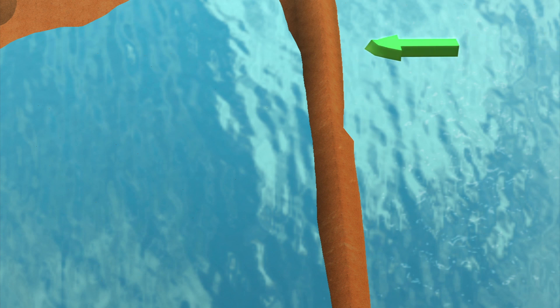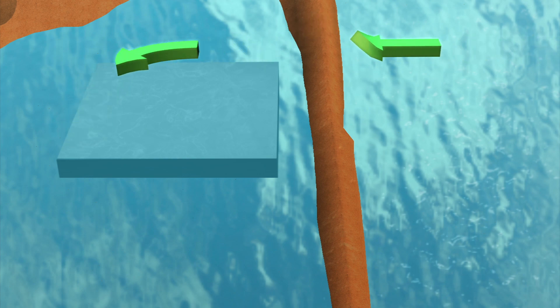As waves break over a sandbar, the water level on the landward side increases, creating a pressure gradient that drives the current along shore.